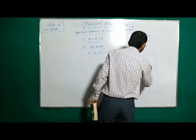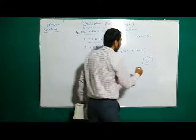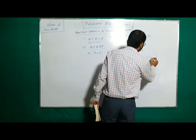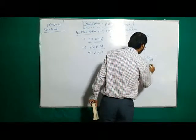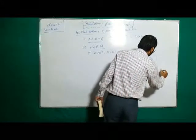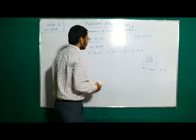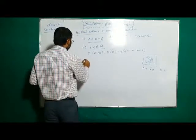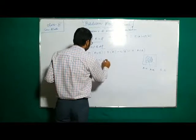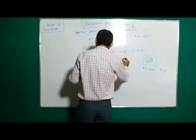From the Venn diagram shown in the previous class, A union B can be written as the union of three disjoint sets. Specifically, A union B equals (A minus B) union (A intersection B) union (B minus A).